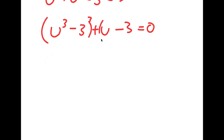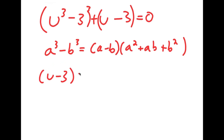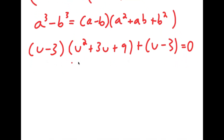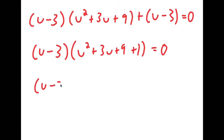If I have something in the form a to the power of 3 minus b to the power of 3, this equals a minus b times a squared plus ab plus b squared. So this turns into u minus 3 times u squared plus 3u plus 9 plus u minus 3, which equals 0. Because both terms have a common factor of u minus 3, I factor out u minus 3 and get u minus 3 times u squared plus 3u plus 9 plus 1 equals 0. Since 9 plus 1 is 10, I get u minus 3 times u squared plus 3u plus 10 equals 0.